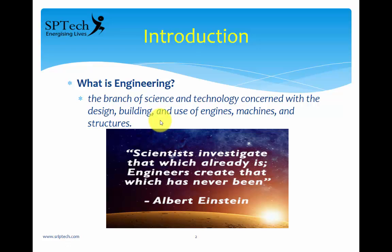Anybody who is involved in engineering is called an engineer. We also need to know who a scientist is, because it is very important to differentiate between an engineer and a scientist. Scientists are those who create theories whereas engineers are those who implement them. Both engineers and scientists work hand in hand. More importantly, science is about knowledge and engineering is about invention. Whenever you talk of engineering, it's all about innovation, invention, and getting some new product to the world.